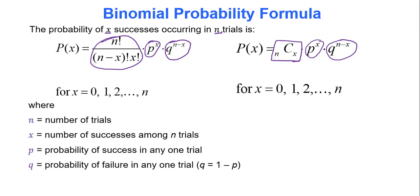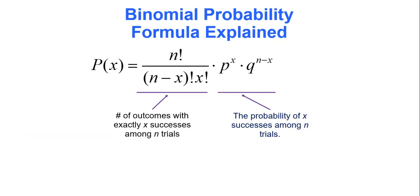We need to practice using this formula. To recap: N is the number of trials, X is the number of successes, P is the probability of a success in a single trial, Q is the probability of a failure, and Q equals 1 minus P. We'll use Google Sheets to do the calculation, but you should know where the formula comes from — otherwise you won't appreciate it as much.